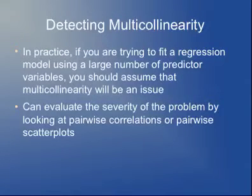So how do you know if multicollinearity is a problem? The simplest way is to just sidestep the issue entirely — assume that if you've got about four or five variables in your model, multicollinearity is a problem unless there's reason to believe otherwise. Once I'm fitting a regression model with more than a couple of variables, I don't even bother to test for multicollinearity; I just assume it's going to be an issue and try to take appropriate steps. But if you're not sure, you can look at pairwise correlations or pairwise scatter plots.